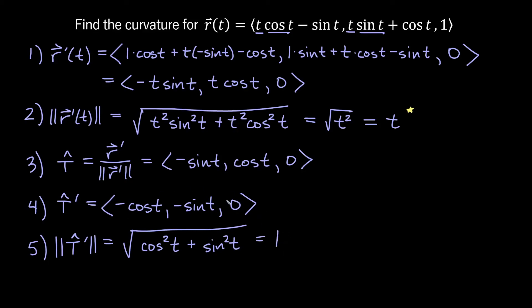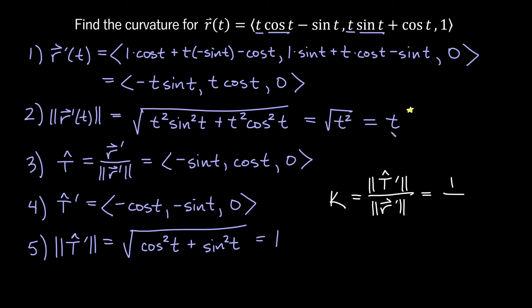It turns out T̂-prime is actually a unit vector — that won't always happen. So our curvature is the magnitude of T̂-prime divided by the magnitude of r-prime, which is 1 divided by t. If we were allowing t to be negative, it would be 1 over the absolute value of t. There's your example for finding curvature. Thanks for watching, everyone — we'll see you in the next video.